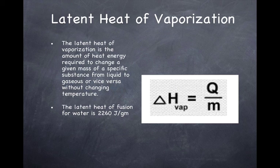If I had liquid water at 100 degrees Celsius — its boiling point — and I want to convert it to steam at 100 degrees Celsius, I'd have to put in 2,260 joules per gram. So that's a very large heat value; that's why steam contains a lot of energy.